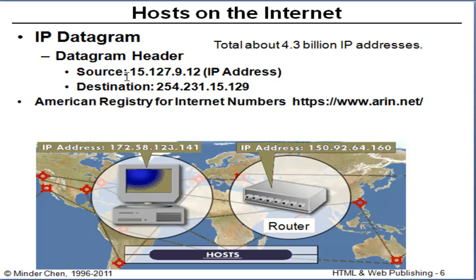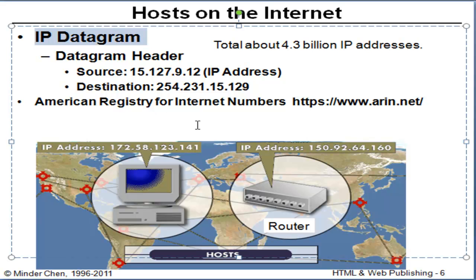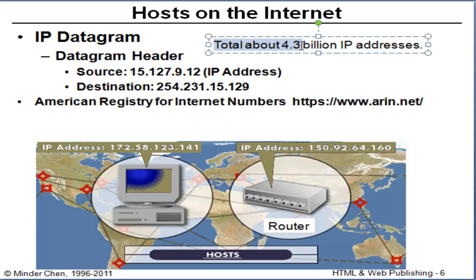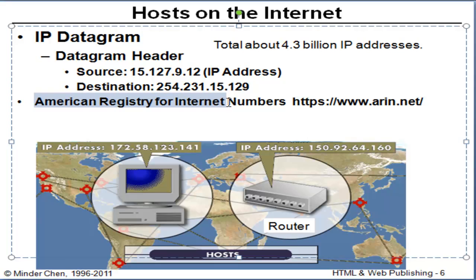For the router to route messages across the Internet, each message is formatted as an Internet protocol datagram. In the datagram, we usually have an IP address indicating who is sending the message and an IP address indicating who will be the receiver. So every computer hooked up to the Internet will have a specific IP address. There are about 4.3 billion IP addresses available, and we're pretty much running out of them currently. The American Registry for Internet Numbers is the authority responsible for assigning IP addresses.